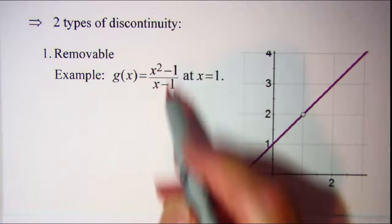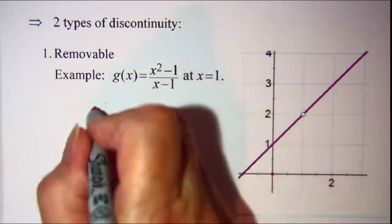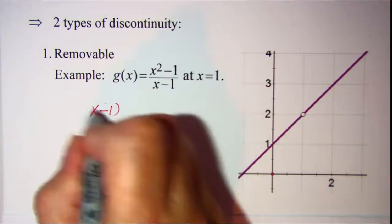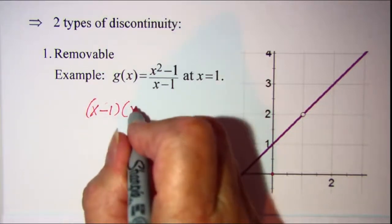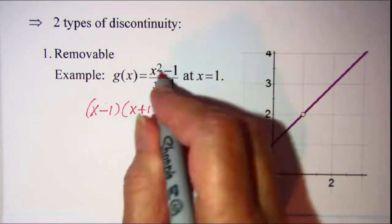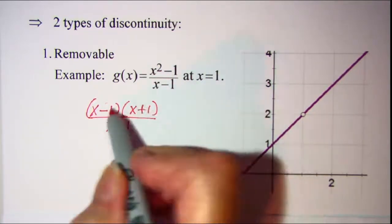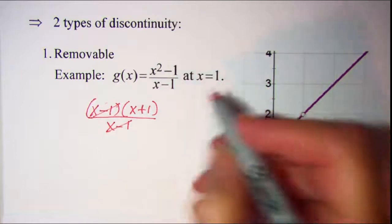Now this is removable because if we take this function and rewrite it in its factored form, we have x minus 1 times x plus 1, this is the difference of squares, over x minus 1 and these factors will cancel off.